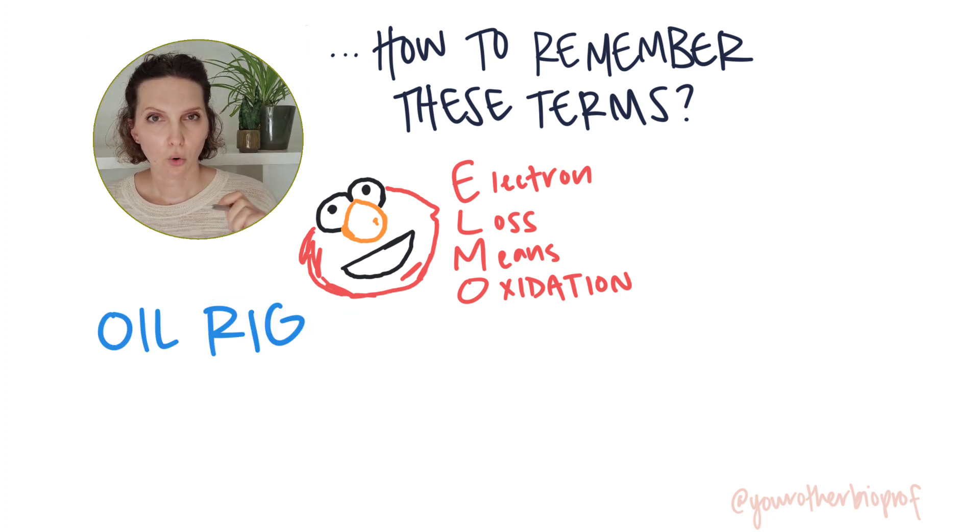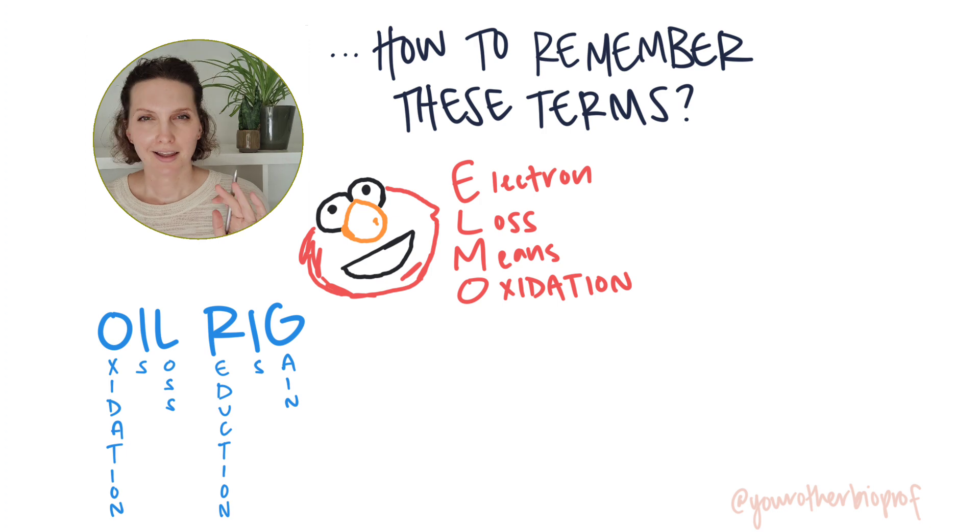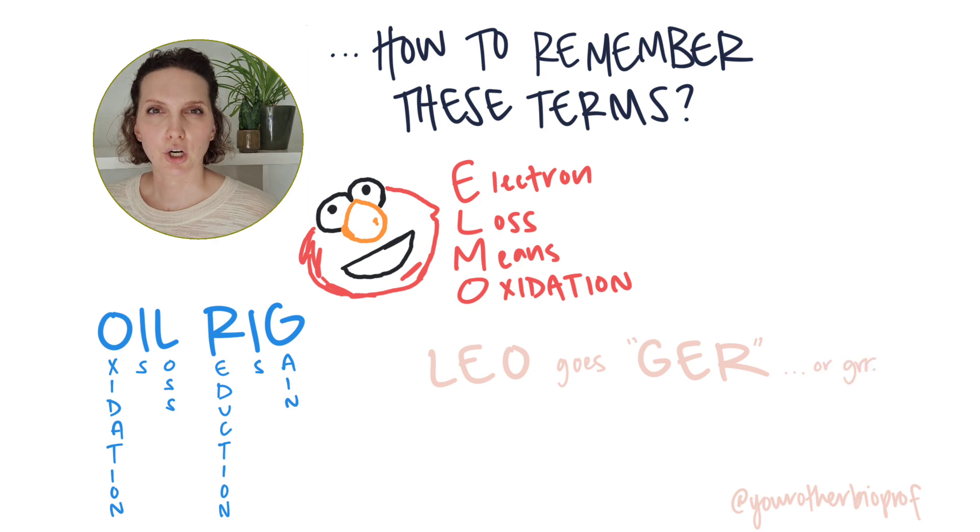Here's a popular one. Oil rig. Oxidation is loss. Reduction is gain of electrons. And one more spelled a little funky, but if you sound it out, it works. Leo goes grrr. Lose electrons, oxidation. Gain electrons, reduction.